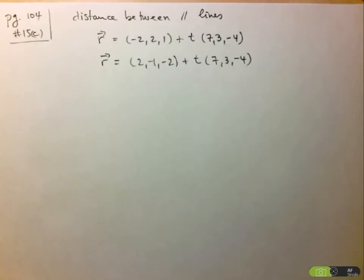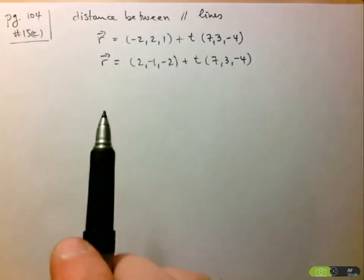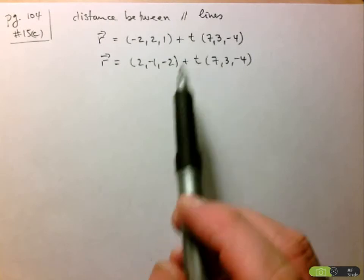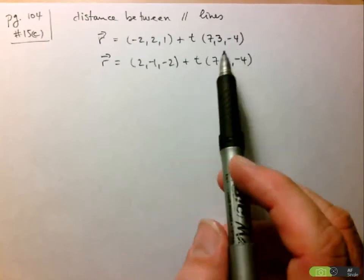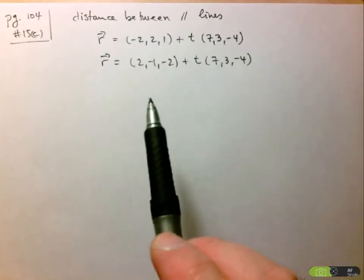They're asking us to determine the distance between the following parallel lines. It's clear that these are parallel lines since the direction vectors are in fact the same.